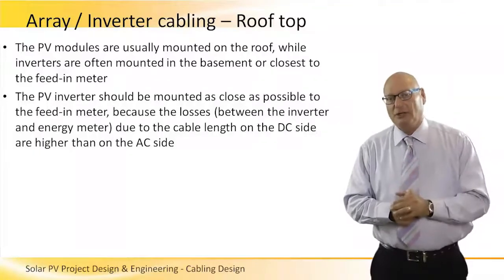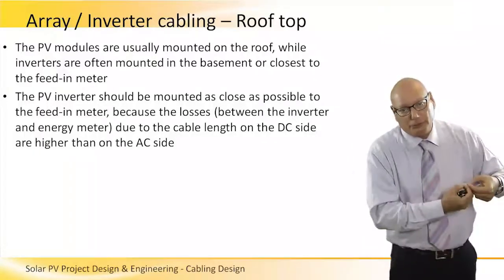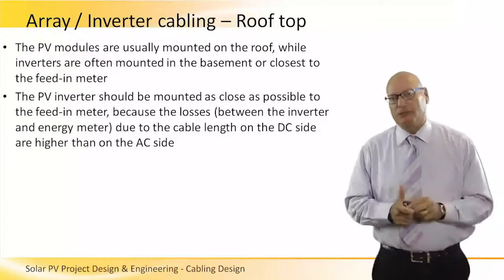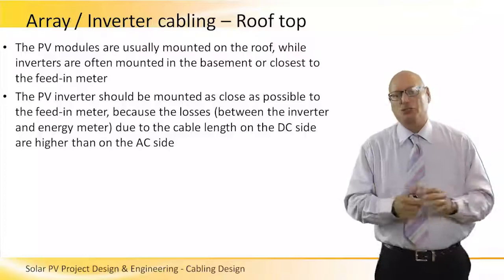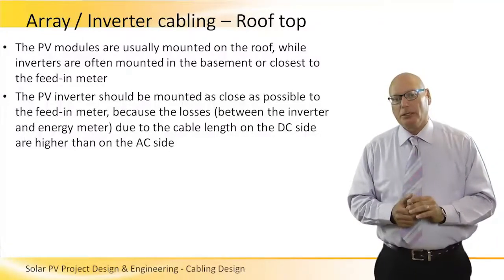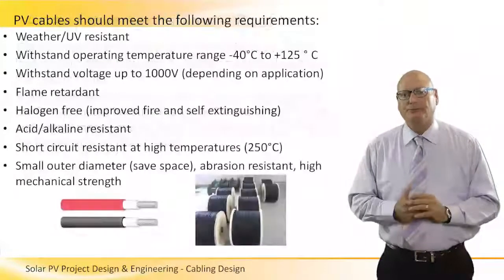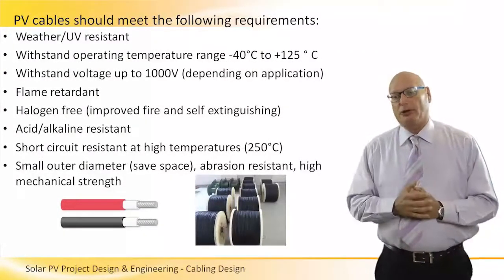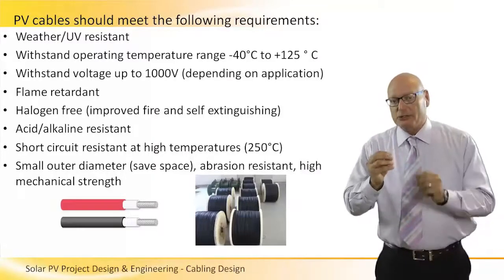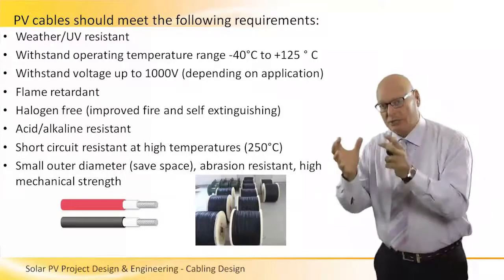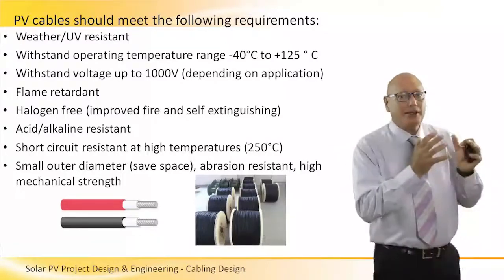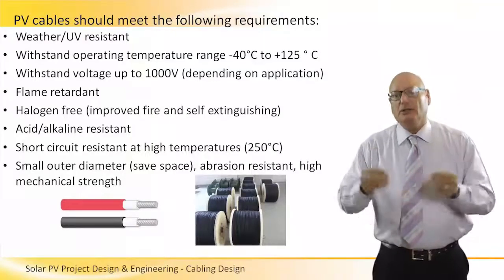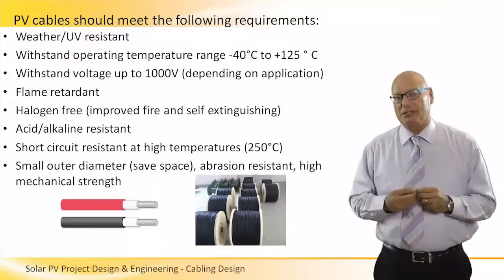This is why the AC cables coming out from the inverter should have large diameters in order to minimize the voltage drop and be made as short as possible. PV cables should meet the following requirements — this is very important because no matter what we produce in the panel and what is the efficiency of the inverter, the cables in between create a loss and we want to minimize this loss.